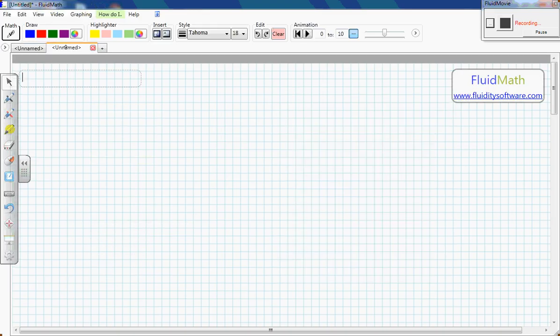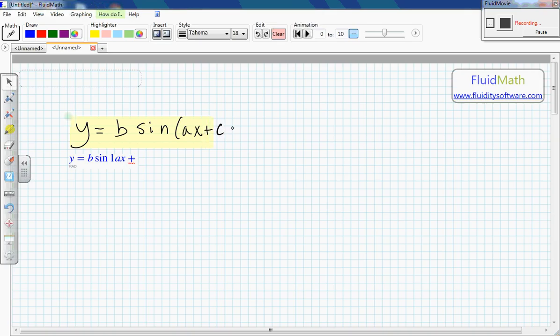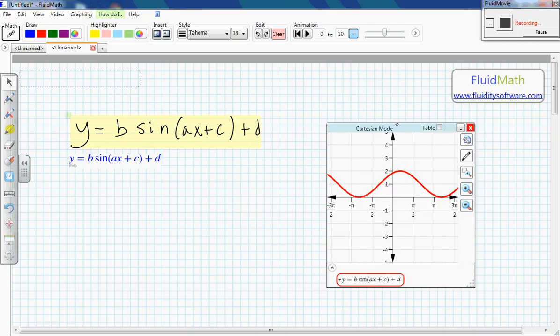Now I'm going to do a sine function. So here we go. y equals b sin(ax plus c) plus d. Of course, that's sort of the general form of the sine function.